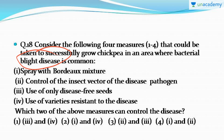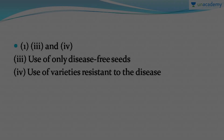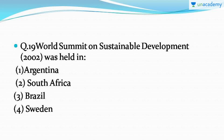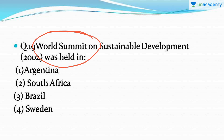Moving forward to a theoretical question: the World Summit on Sustainable Development 2002 was held in — it's not necessarily 2002 that's asked; any particular year may be asked, so you have to learn each year and its location. The correct answer is option number two: South Africa — this is where the World Summit on Sustainable Development in 2002 was held.